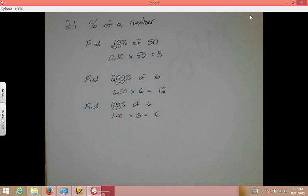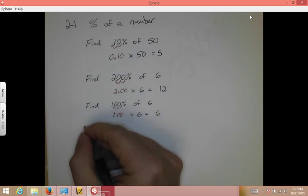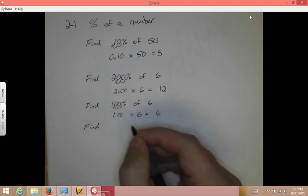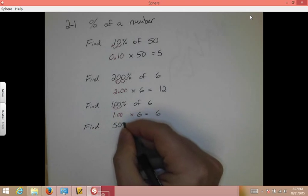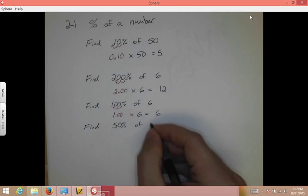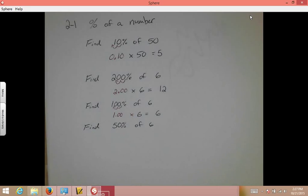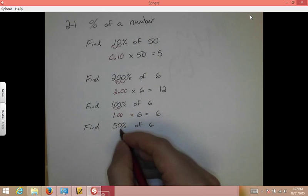What if you do something really small? Let's say, find 50% of 6. Well, 50% we know is half, and half of 6 is 3, but let's see mathematically, let's prove this.